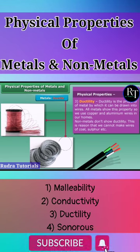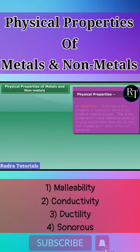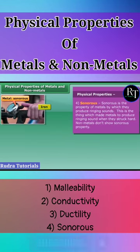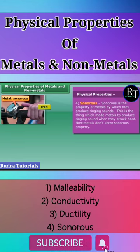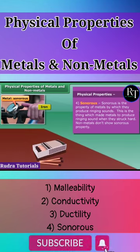Now let's talk about another property of metals, that is sonorous. Metals produce ringing sounds when they struck, so are said to be sonorous. The materials other than metals are not sonorous.